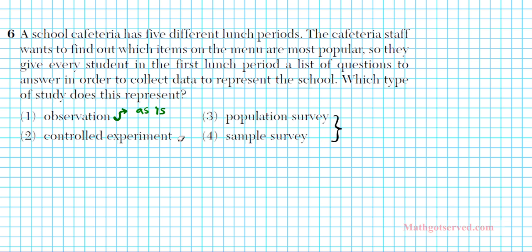A controlled experiment involves the opposite of that. In an experiment you actually manipulate the elements of your study — your sample population. You actually interact and make changes, then document how those manipulations affected your outcome. A population study involves collecting information from a sample population or a population. So that is the difference between the three.